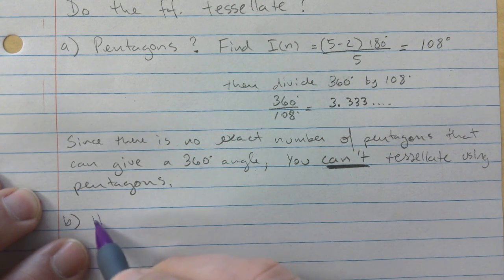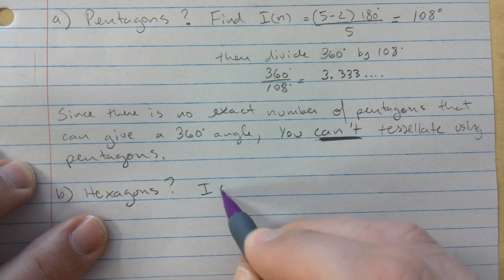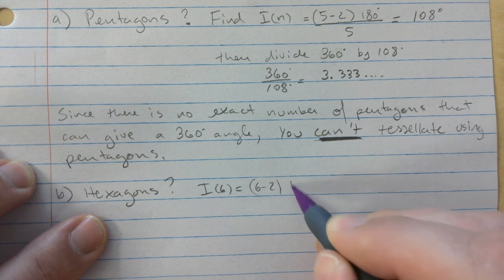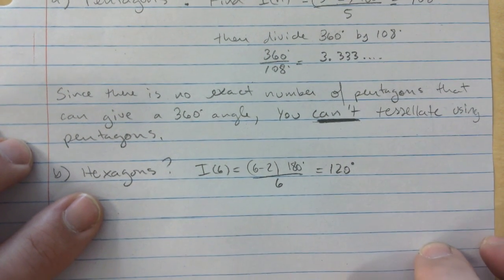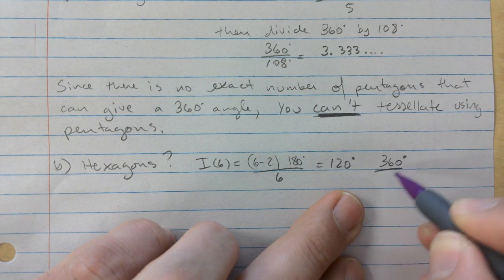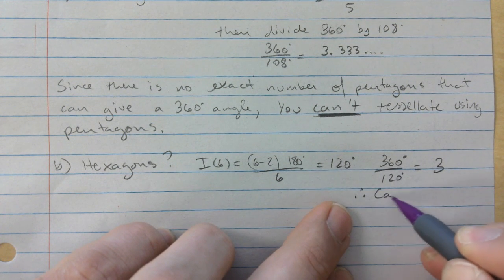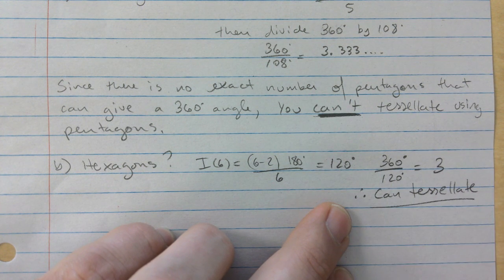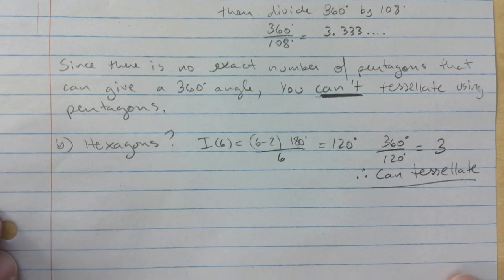So what about hexagons? We know that the interior angle of a six-sided shape is 6 minus 2 times 180 divided by 6 and that's 120. So we'll go 360 divided by 120, that's exactly 3, therefore can tessellate because you get a whole number out of it.